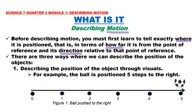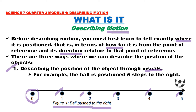There are three ways to describe the position of objects. Number one, we can describe position through visuals. For example, in figure one, a ball pushed to the right — the ball is positioned five steps to the right. The starting point of our visual is zero, then one, two, three, four, and five. So here we can tell where the object is positioned: five steps to the right.